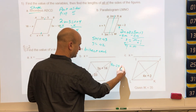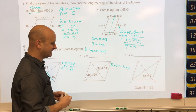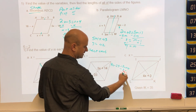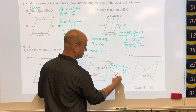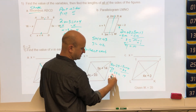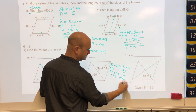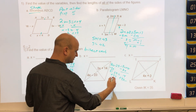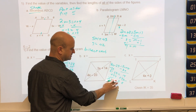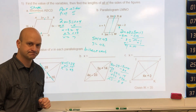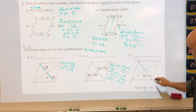Same idea here: 4x minus 23 equals 3x plus 14. Move the smallest variable, then move the numbers to the other side — do the opposite operation — and you get x equals 38.